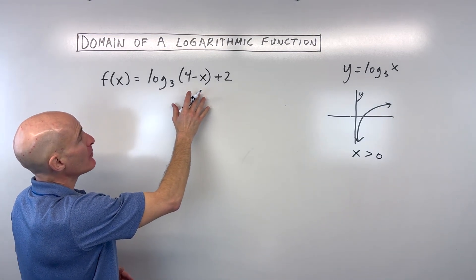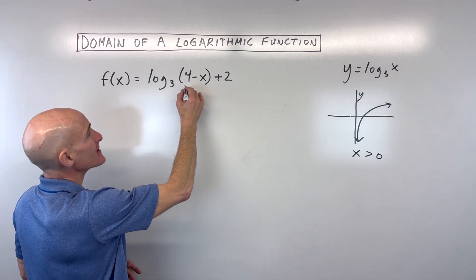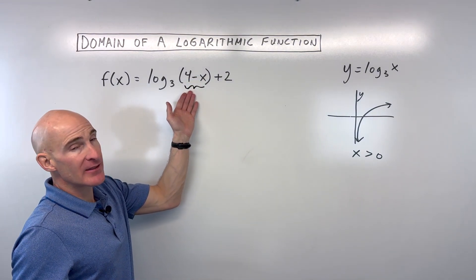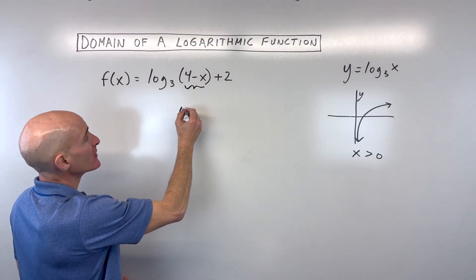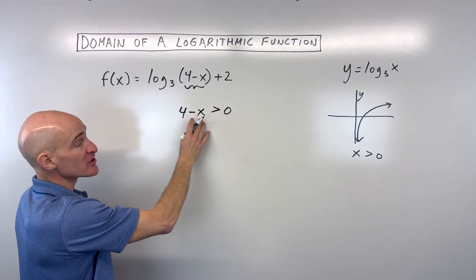But here we have a little bit more complicated logarithmic function, and so what you can do is take this quantity that's in the parentheses here, that's grouped with the log, that quantity there, that argument, has to be greater than 0. So what you can do is make a little inequality: 4 minus x is greater than 0, and solve for x.